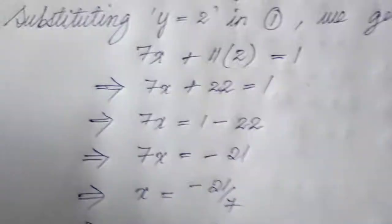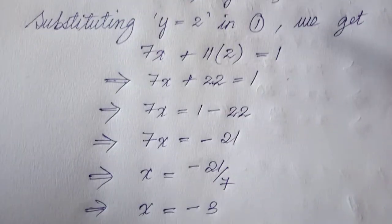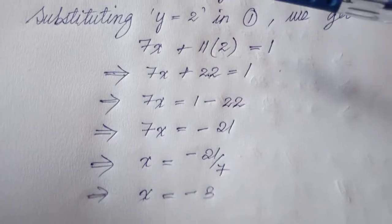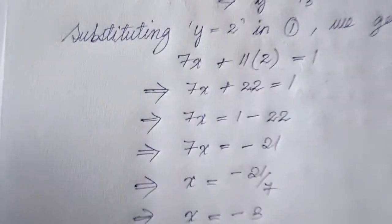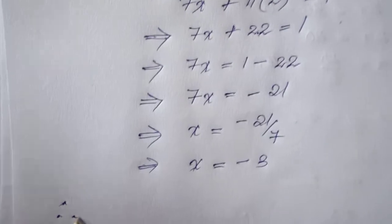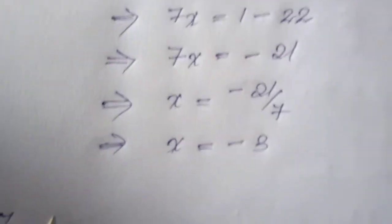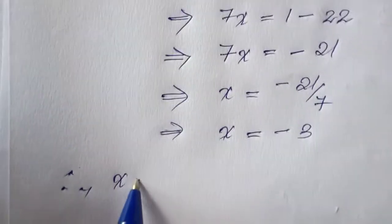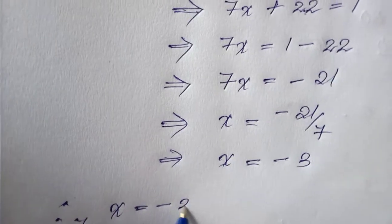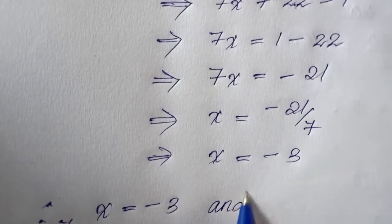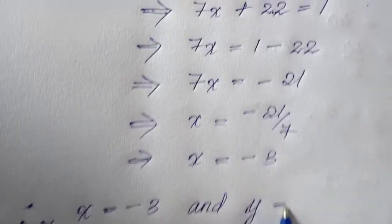I have now found both values. Therefore, x is equal to minus 3 and y is equal to 2.